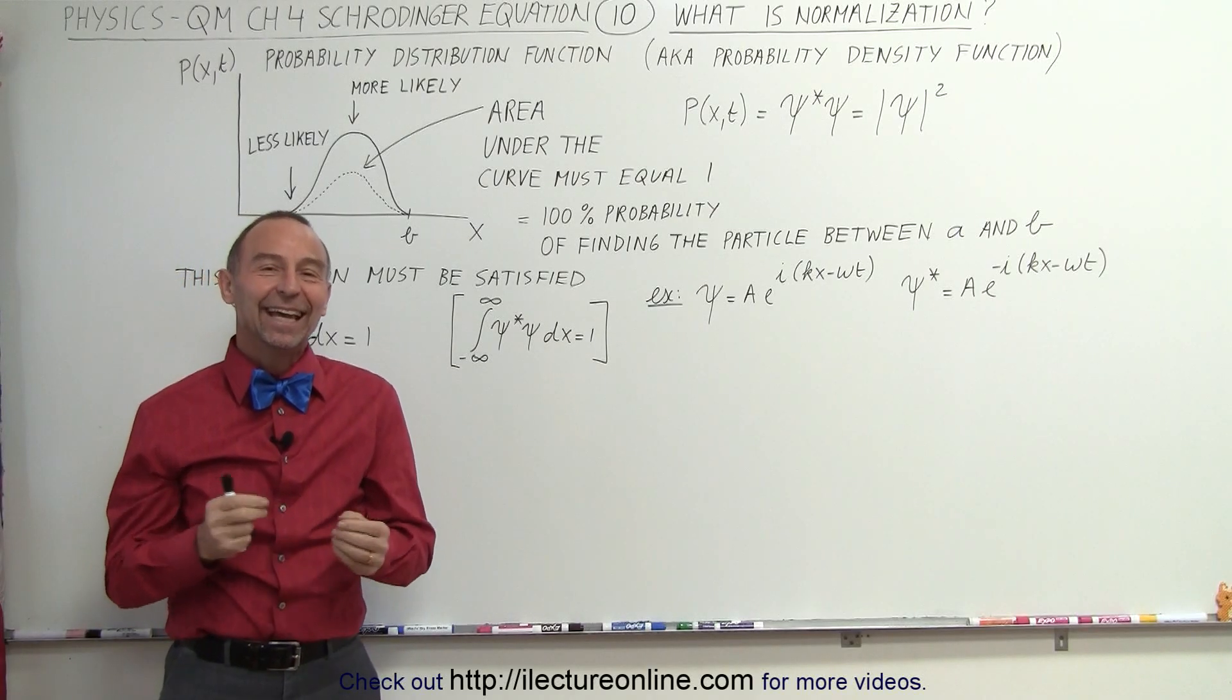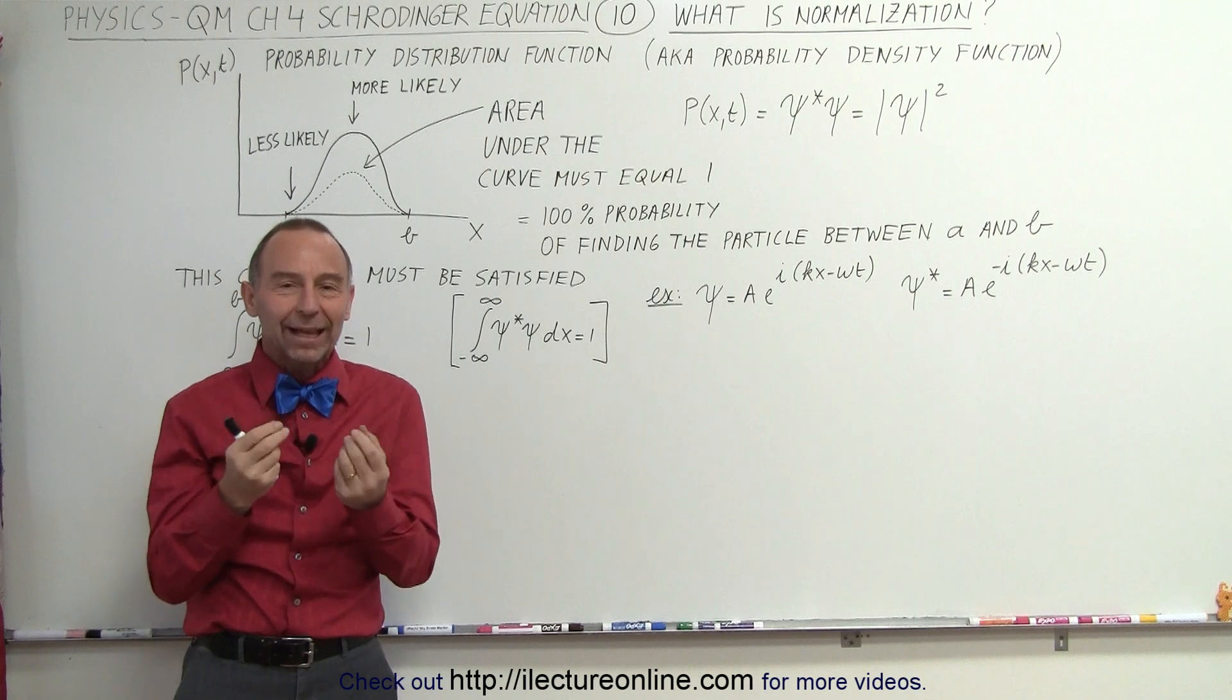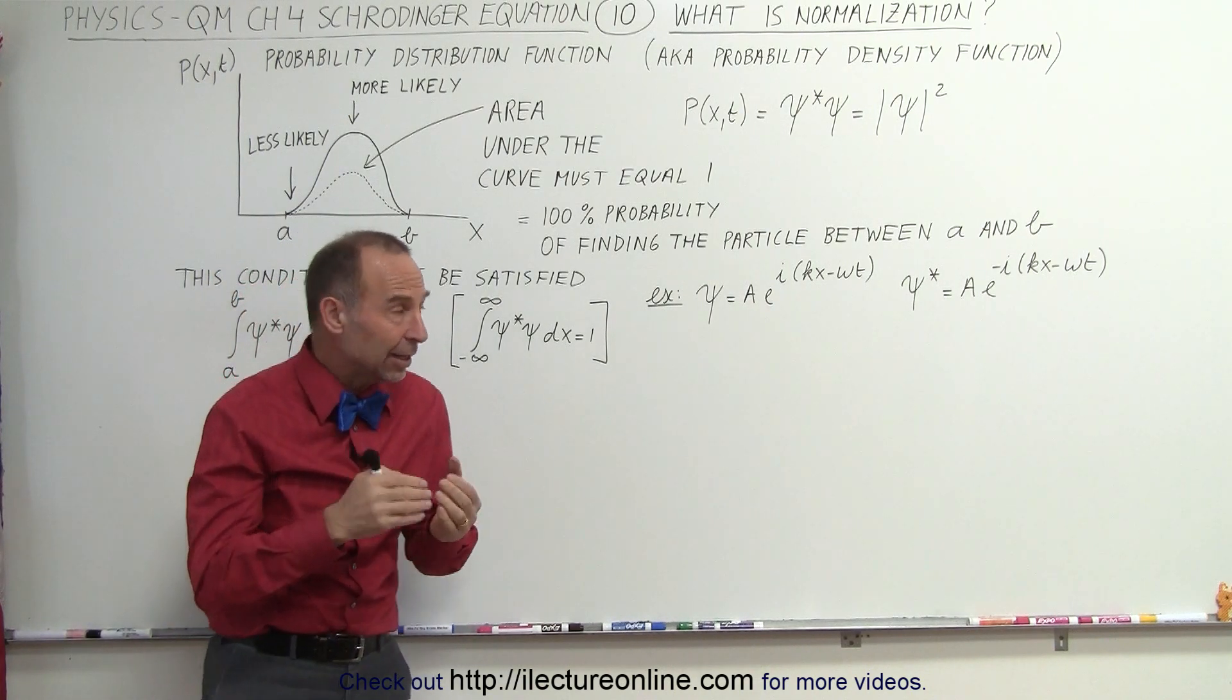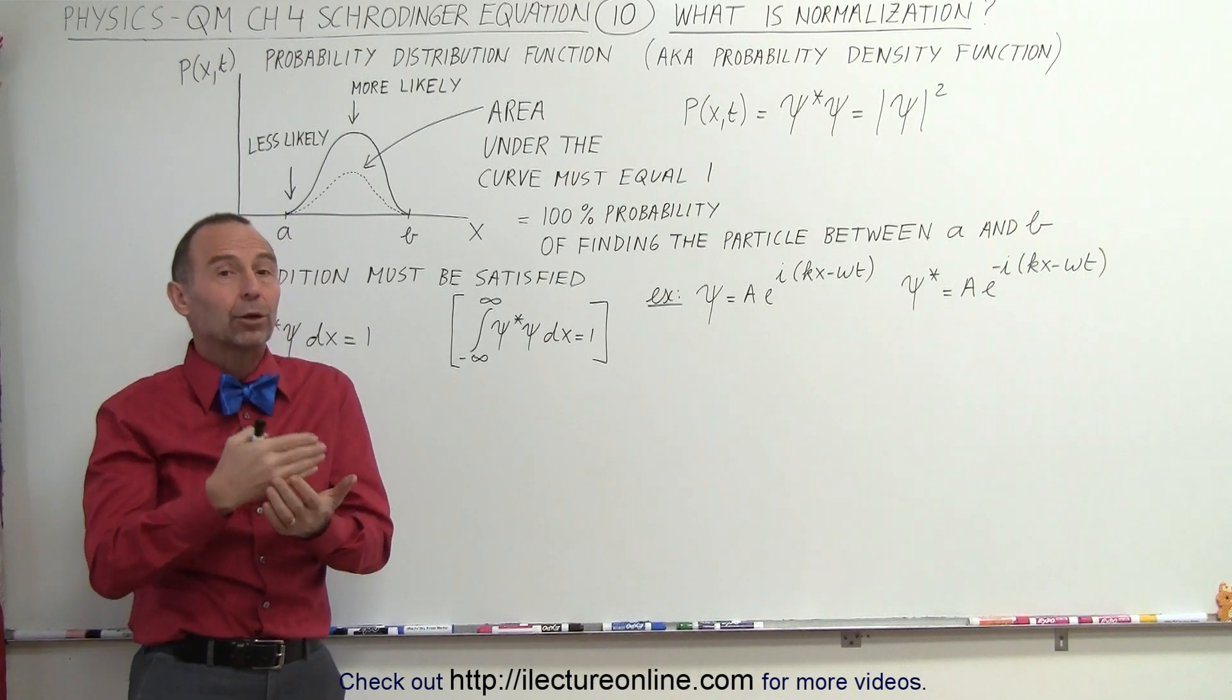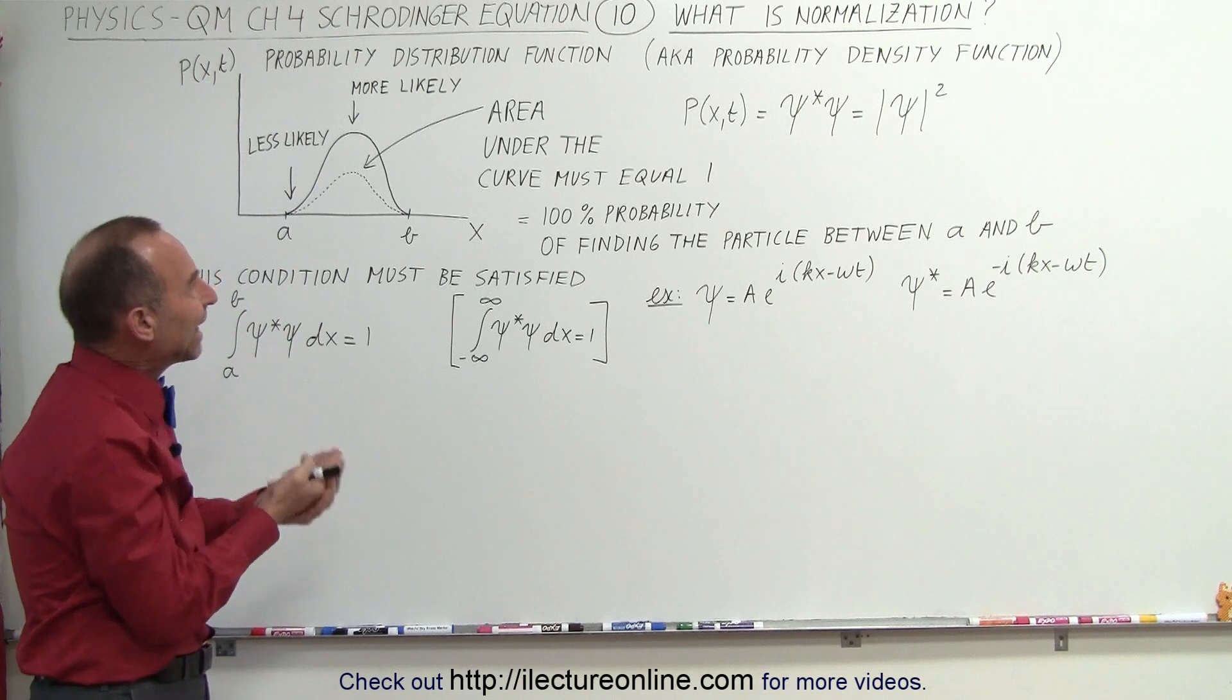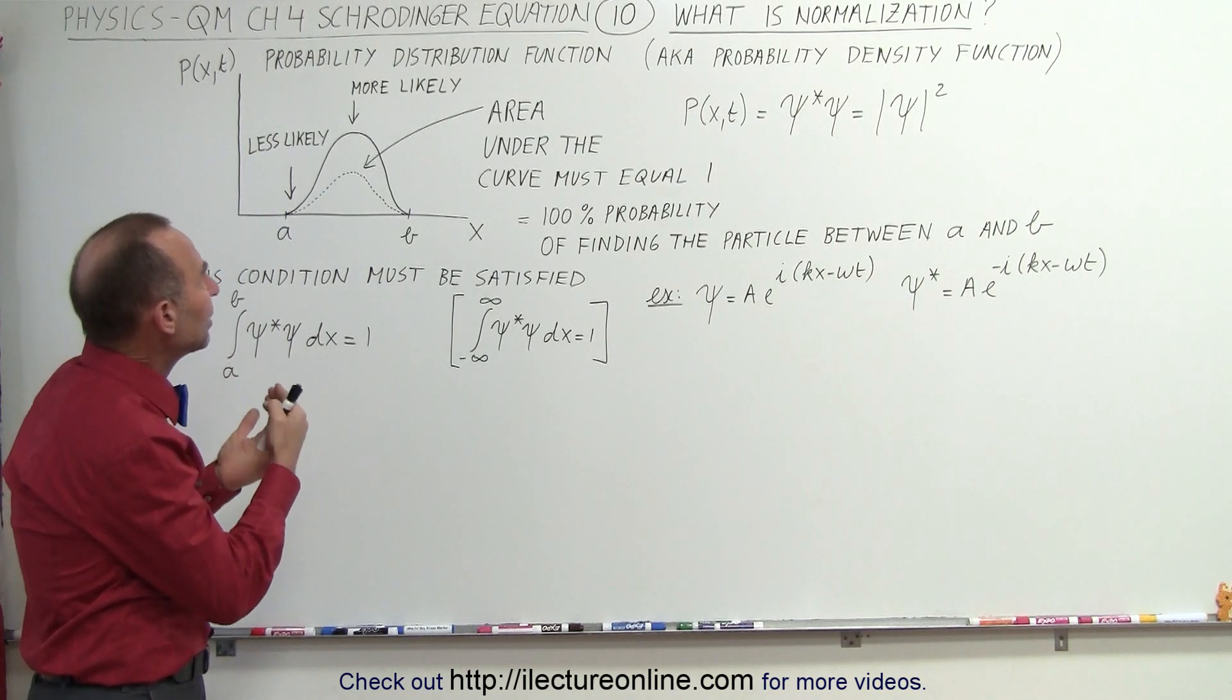Welcome to iLectroLine. In the previous video, we realized that in order to find an equation that describes the probability of finding a particle at a particular location, we would have to normalize what we would call the probability density or the probability distribution.